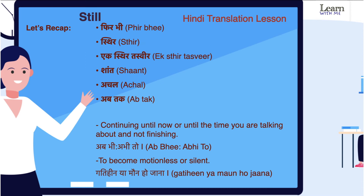Now let's recap. Still ka matlab: phir bhi, sthir, ek sthir tasweer, shant, achal, aur ab tak hota hai. Still has two different meanings — firstly, continuing until now or until the time you are talking about and not finishing (abhi ya phir abhi toh); and secondly, to become motionless or silent (gati heen ya mon ho jana).